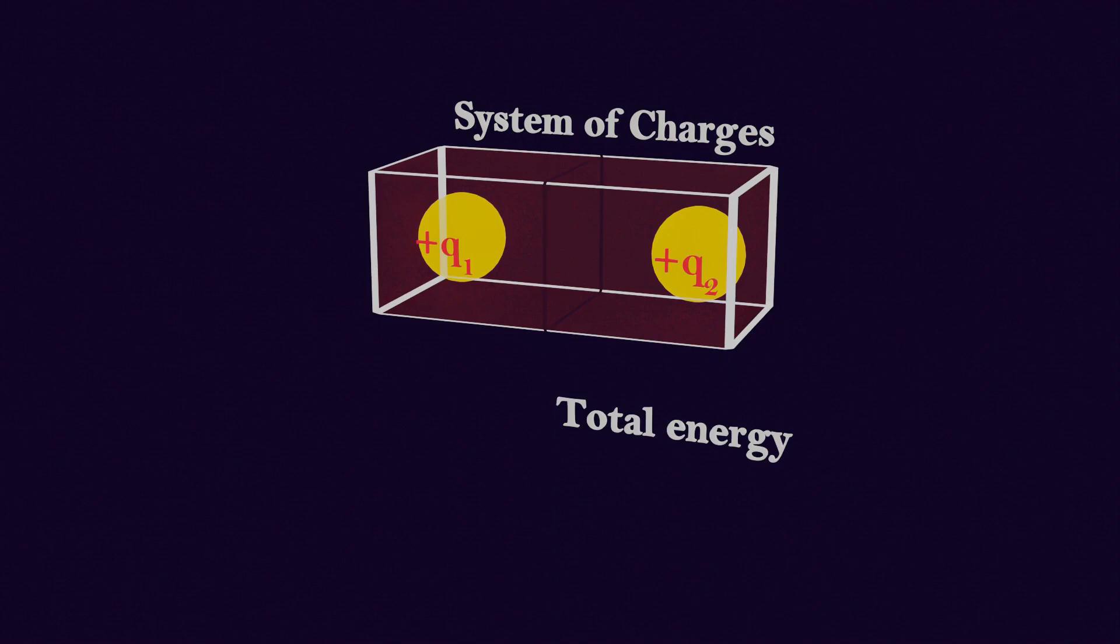So the total energy of the system will be work w1 to move the charge q1 which is 0, but we had to do work to move charge q2, that is w2 and this is not 0.